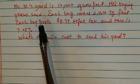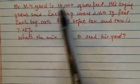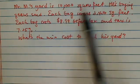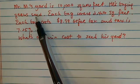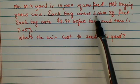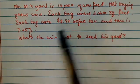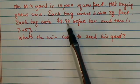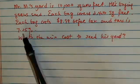Here's an interesting word problem. We're given that Mr. M's yard is 10,000 square feet and he's buying grass seed. Each bag can cover 2,400 square feet. Each bag costs about $9 before tax and tax is 7.25%.